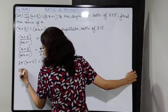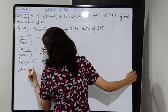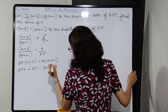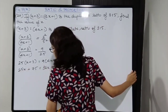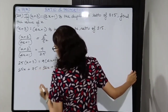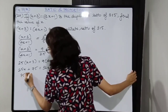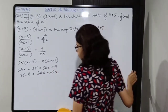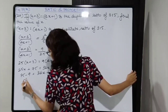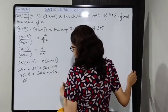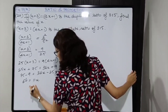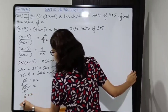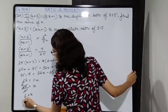Opening the brackets: 25 into x gives 25x, 25 into 3 is 75. 9 into 4x gives 36x, plus 9. Shifting 25x and 9: 75 minus 9 gives 66, and on the other side we get 36x minus 25x which is 11x. So x is equal to 66 upon 11, therefore x is equal to 6.